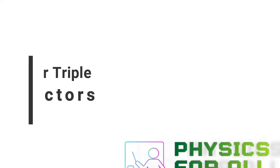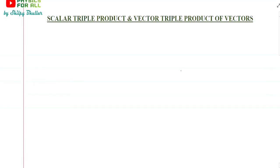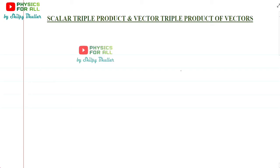Hello everyone. In this series on vector analysis for undergraduate students, we have covered the scalar product and the vector product of two vectors. Today we are going to discuss scalar triple product and vector triple product of vectors. Since the word 'triple' is here, that means this involves three vectors, so we can use three vectors simultaneously.